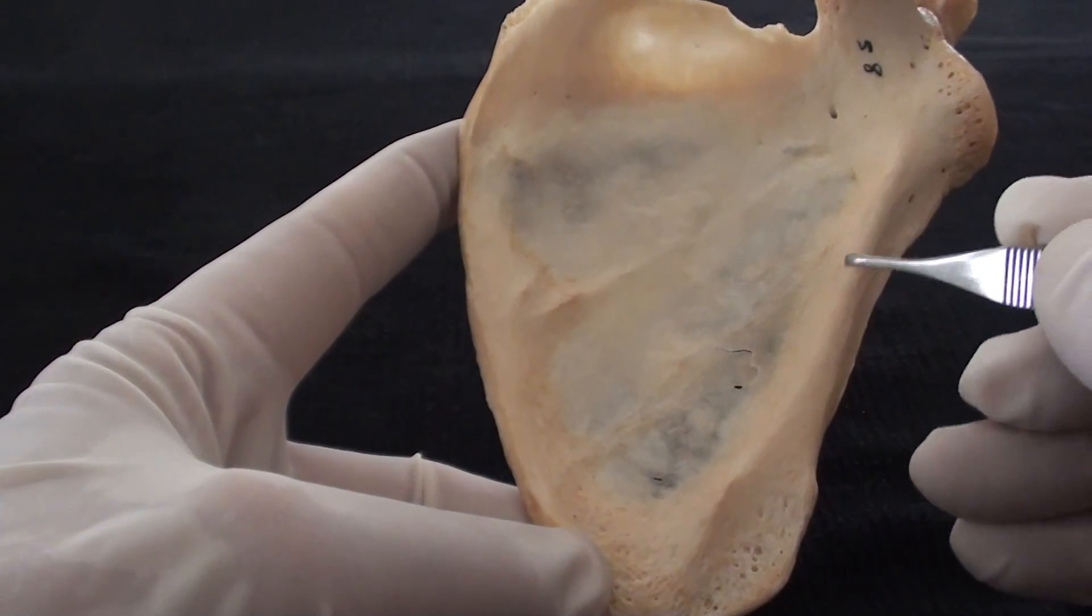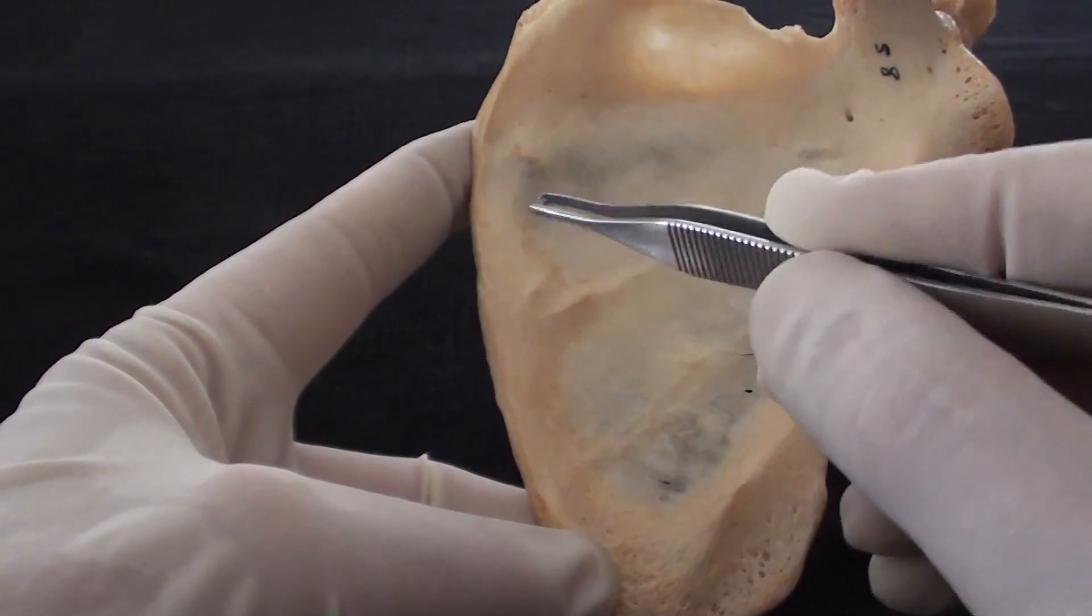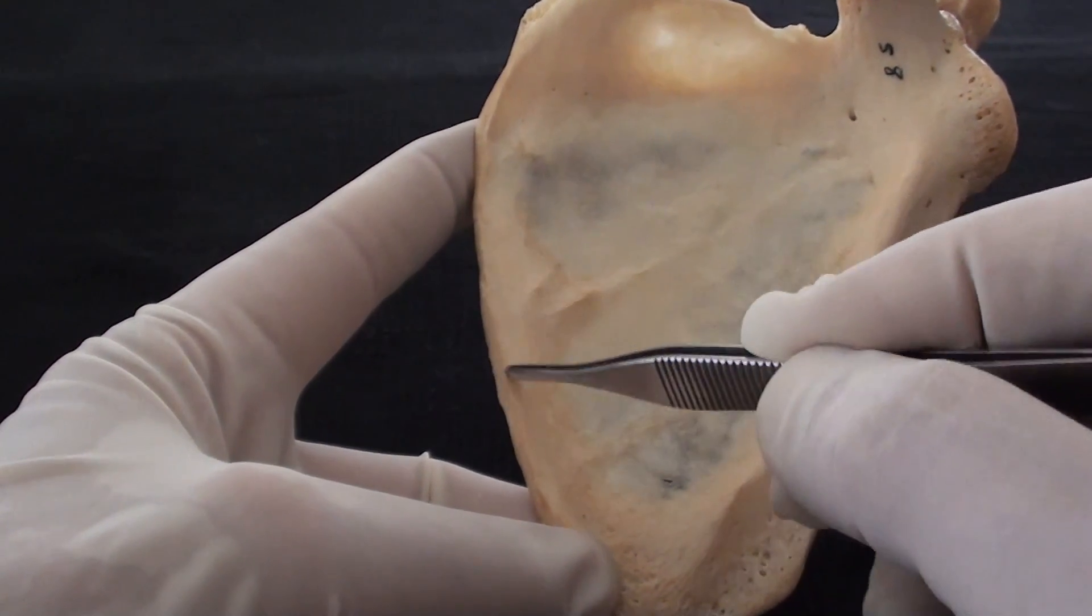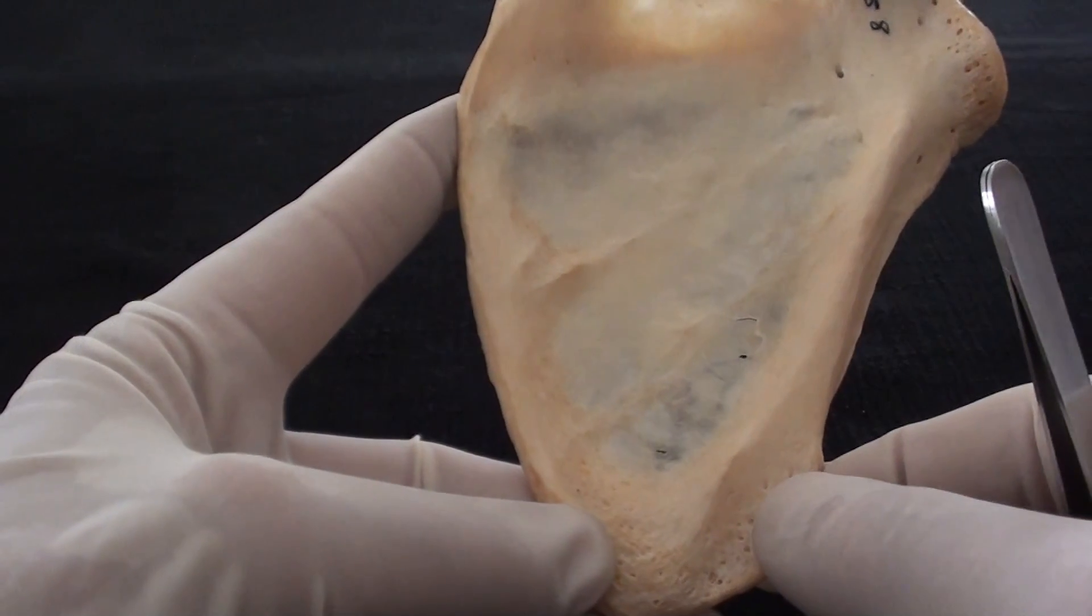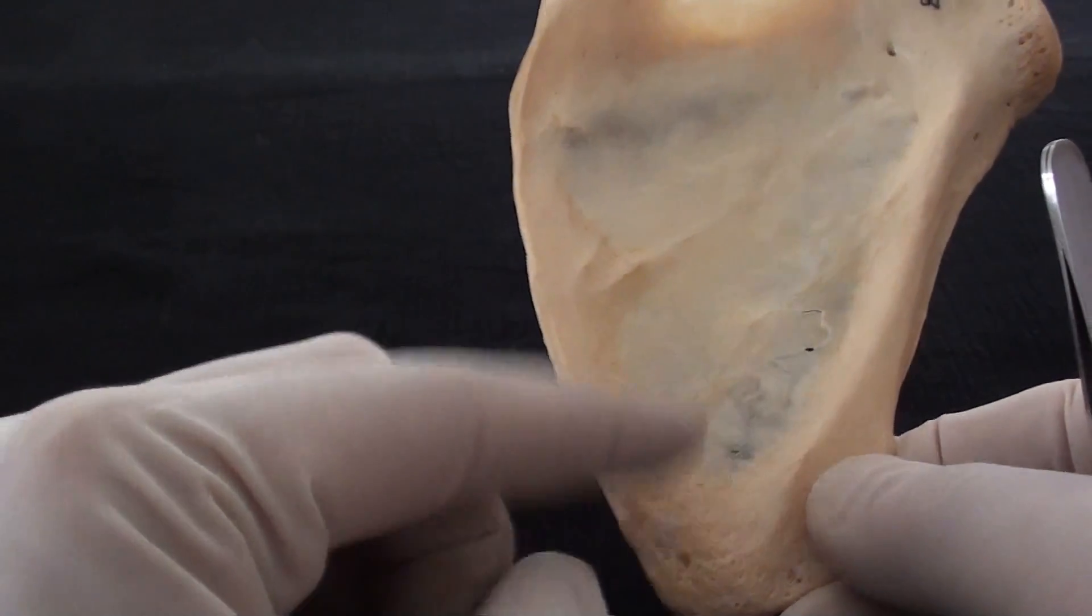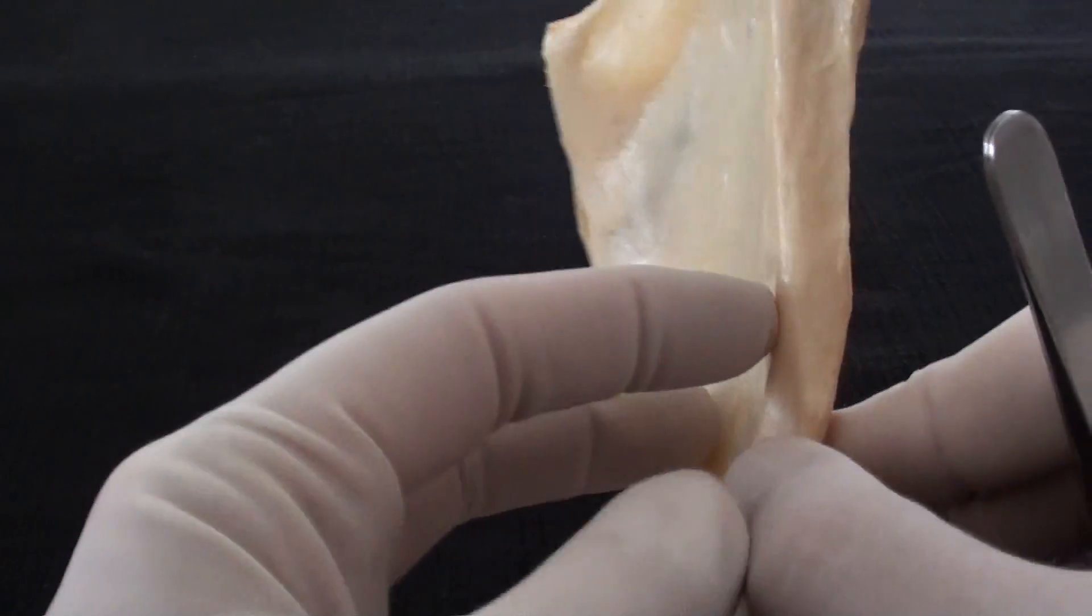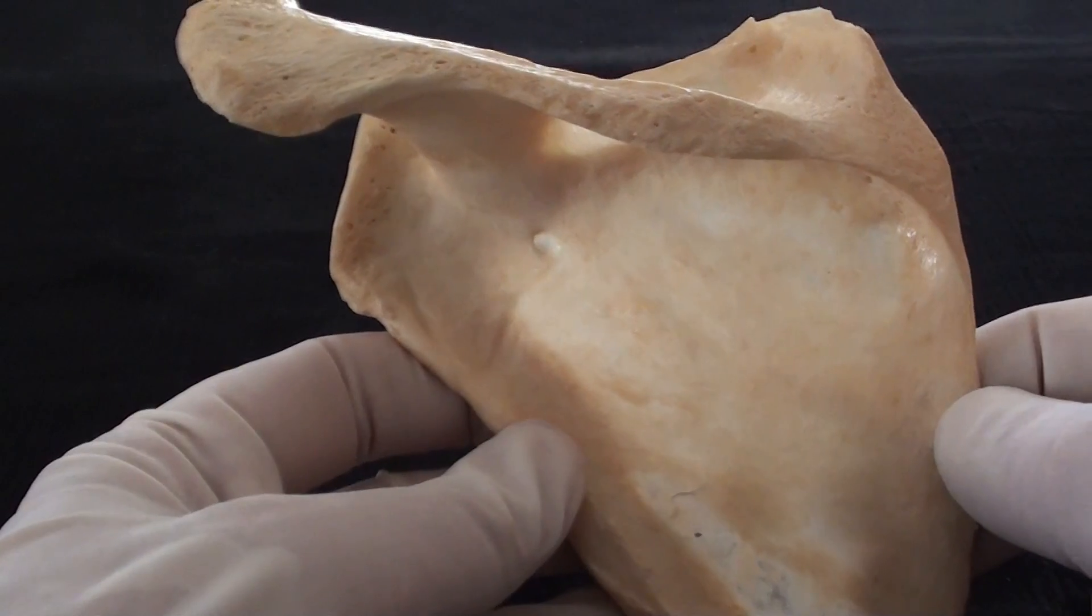On this lateral edge or axillary border of the scapula as well as on the medial or paravertebral border of the scapula we're going to have attachment of additional number of muscles both on the costal or anterior side as well as on the dorsal or posterior side of the scapula.